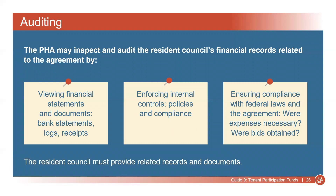The resident council must provide related records and documents. Guide 9 provides a list of records and documents that the resident council must provide to the PHA for the audit. These include a checkbook, a budget and approved budget revisions, disbursement records, deposit records, receipts, bank statements, meeting minutes, and any cash records when applicable.